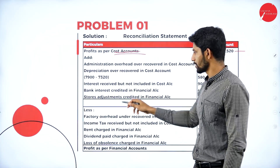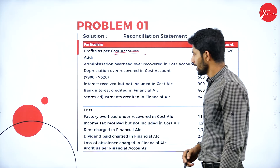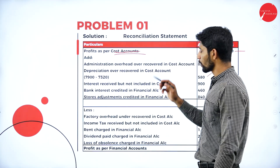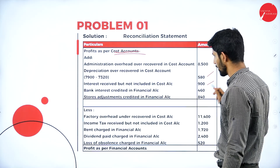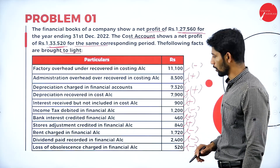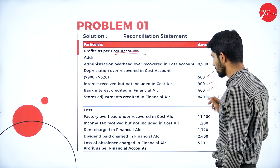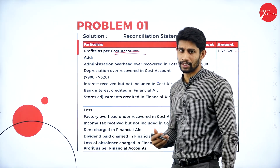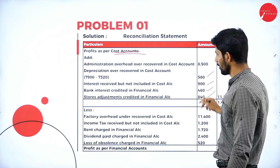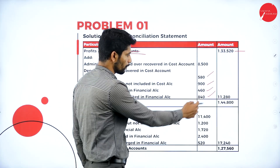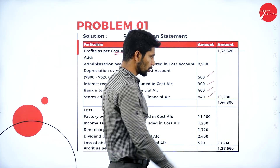Next, the adjusted depreciation is Rs. 7,900 minus Rs. 7,320, giving a balance of Rs. 580 — add. Next, interest received but not included in cost account: add Rs. 900. Bank interest credited in financial account: add Rs. 460. Stores adjustments credited — the amount is coming in, shown in the financial account but not in cost, so we are adding Rs. 840. Total all the adding items: you get a total of Rs. 11,280. Add that to Rs. 1,33,520 to get a total of Rs. 1,44,800.